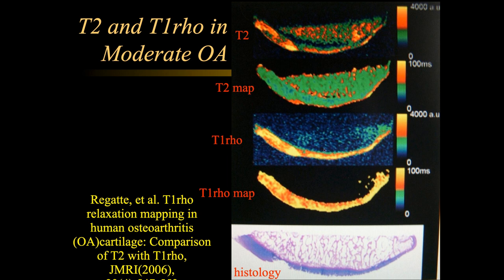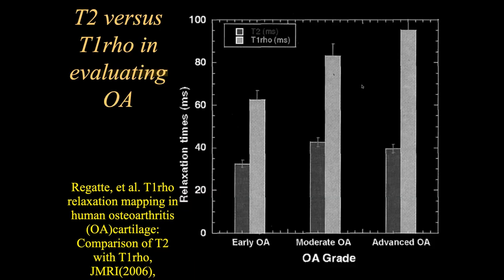You can see the thickness and signal changes. The scale on the right shows the numerical value. What we'll see later is that T2 mapping can correlate quite closely with the actual proteoglycan content within the tissues. However, changes in T2 time do not correlate very well with the degree of osteoarthritis.